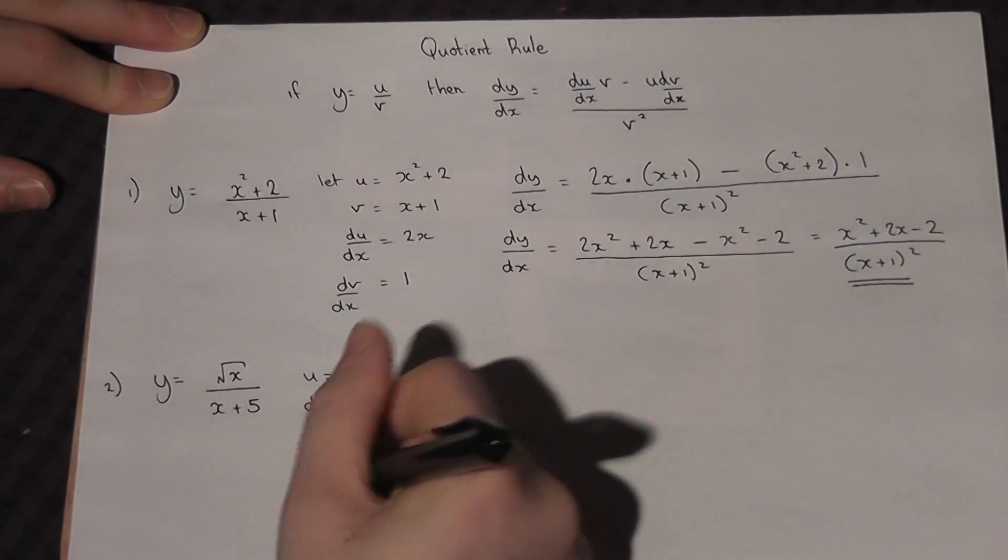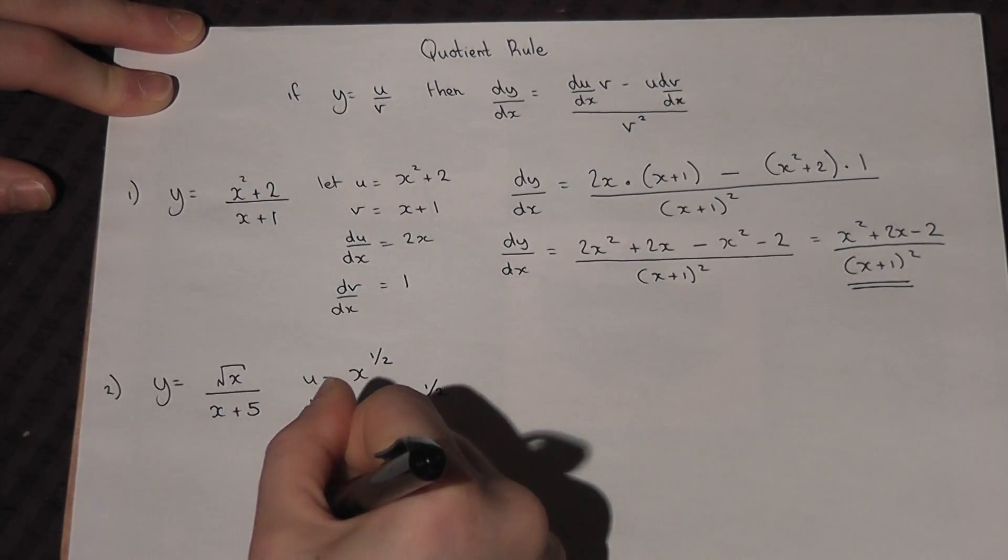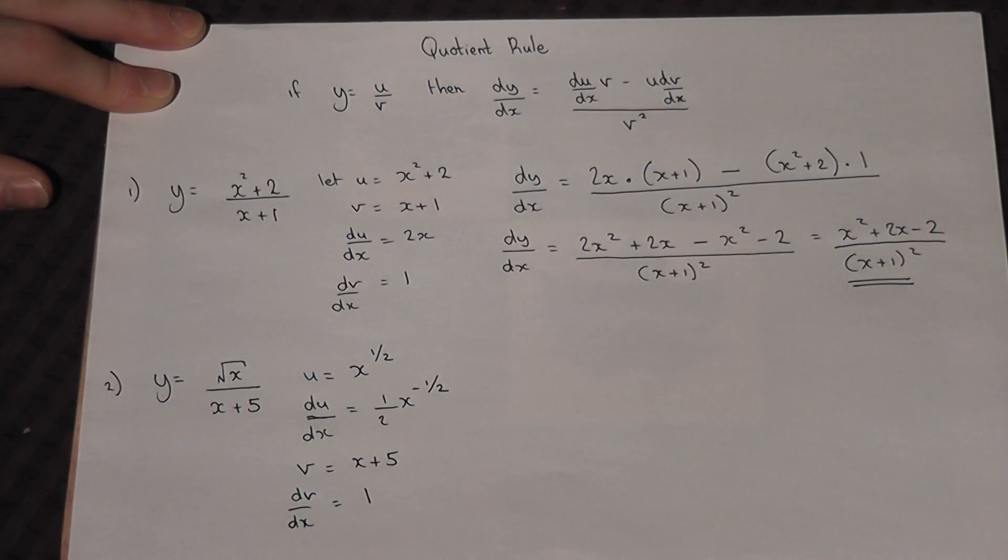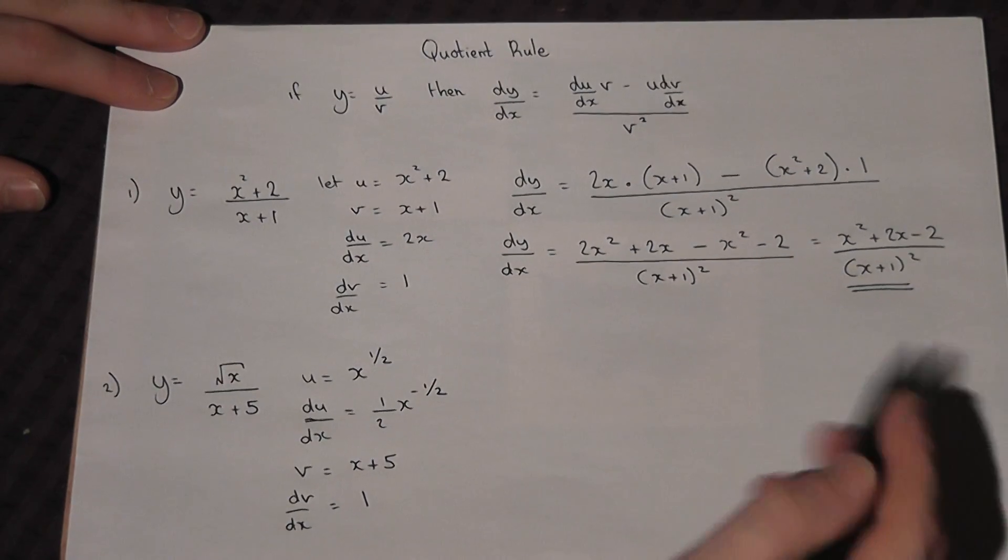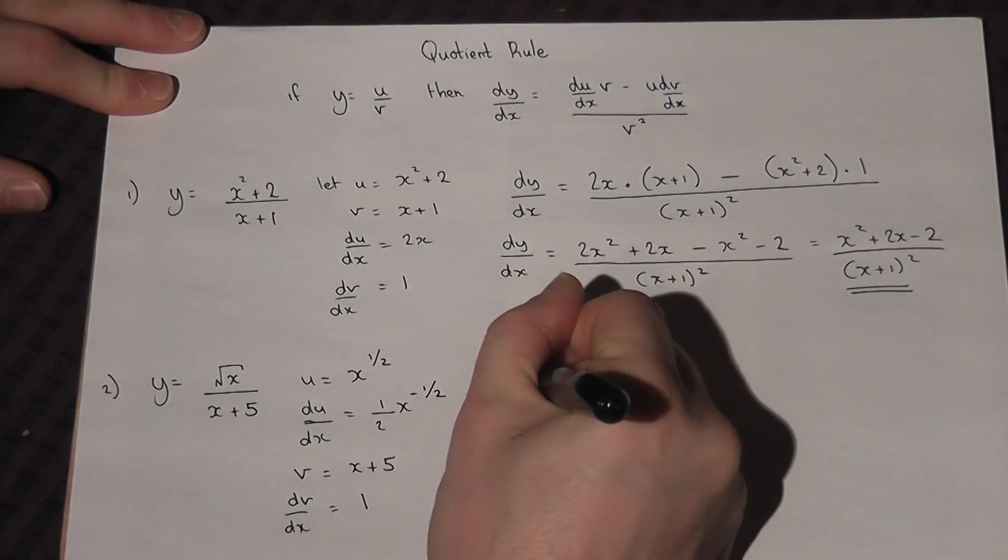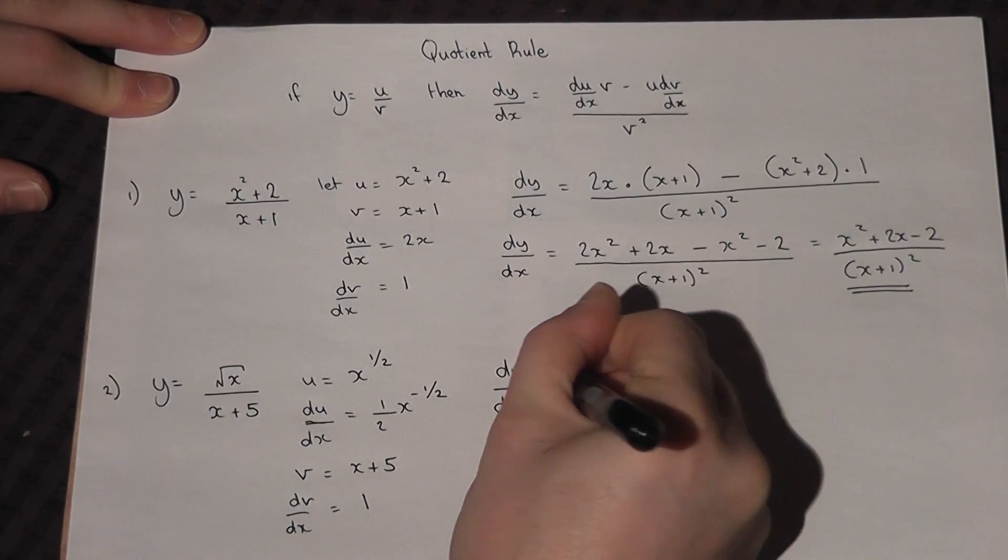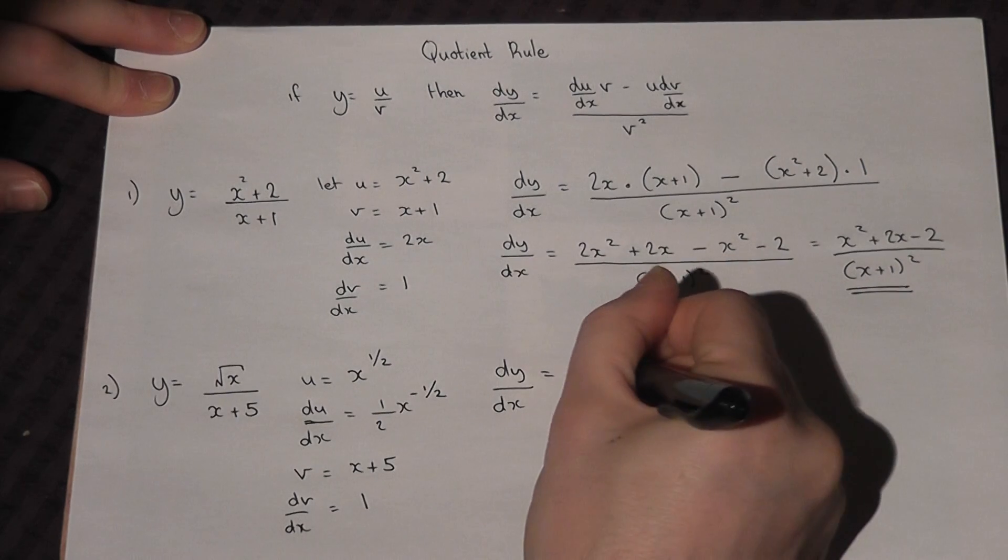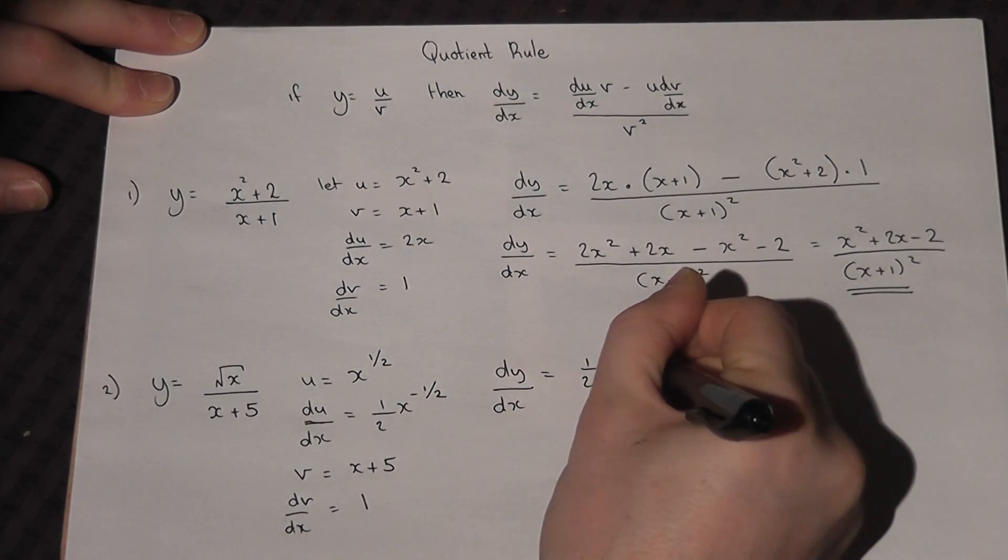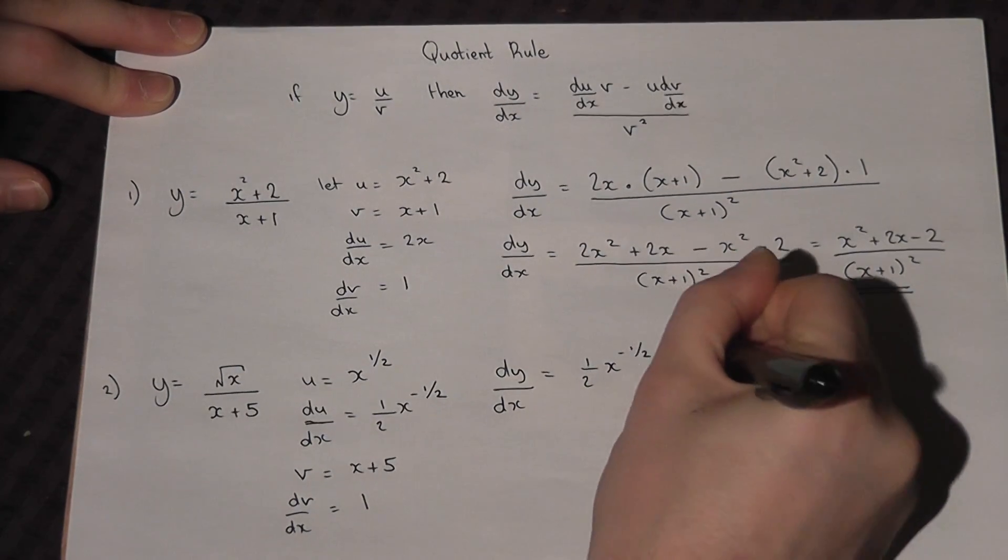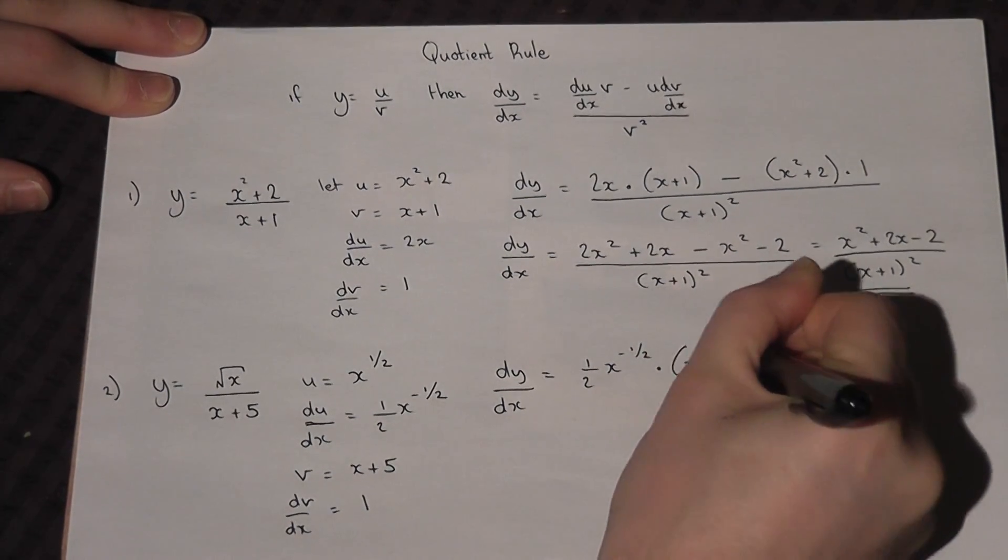So dv by dx will just equal 1. We must now put all these bits and pieces into the quotient rule equation. So dy by dx is equal to du by dx, which is a half x to the minus a half, times by v, which was x plus 5.